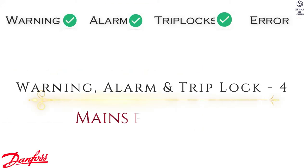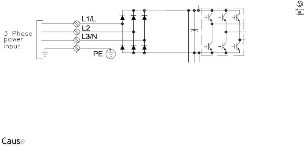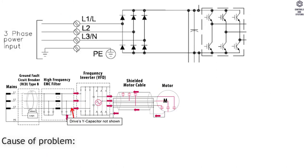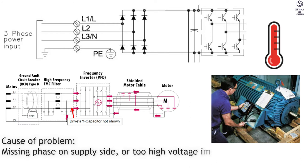Warning, Alarm and Trip Lock 4: Mains Phase Loss. Cause of Problem — missing phase on supply side, or too high voltage imbalance. Check supply voltage.